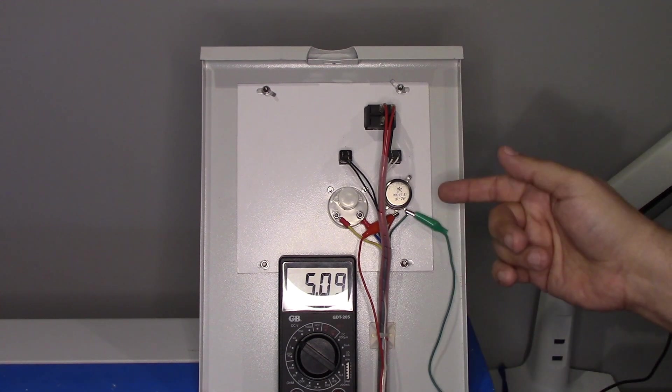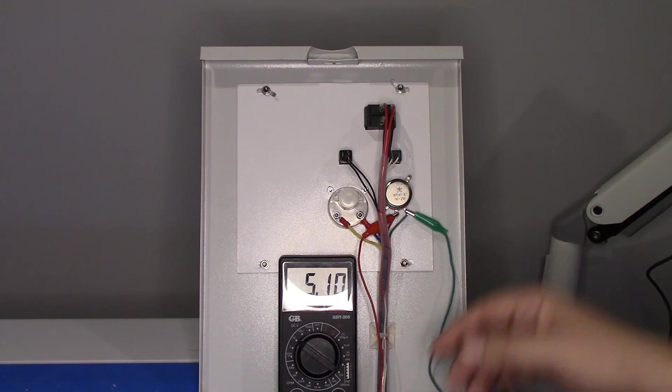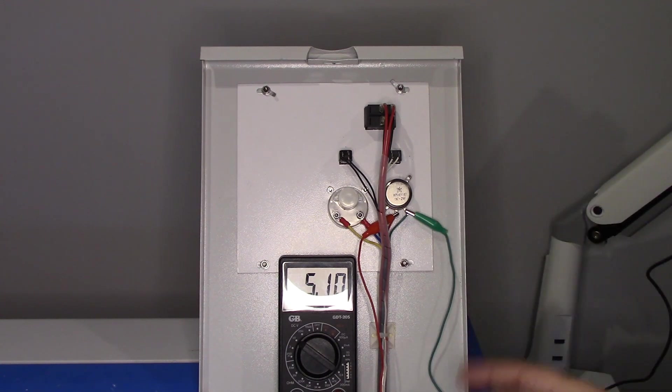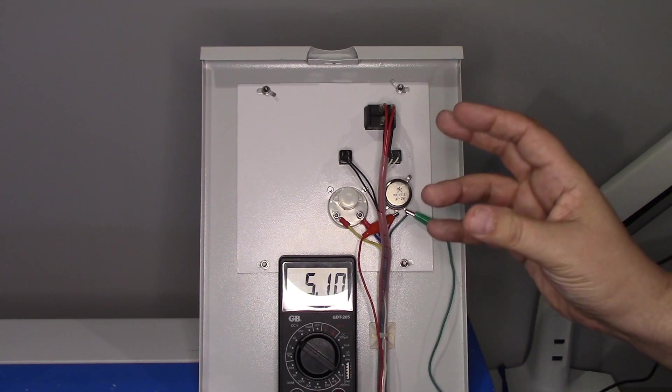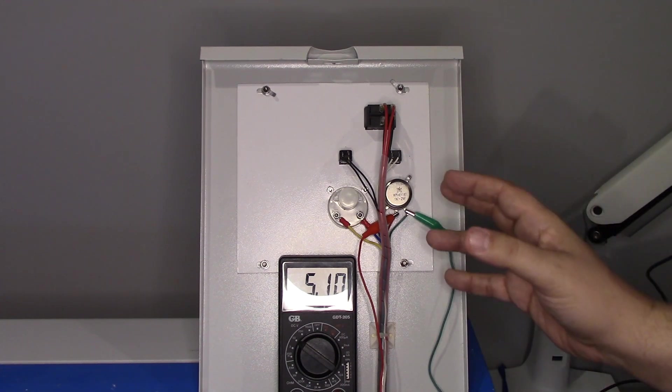So, again, in a future video, I'm going to show how to replace this. It's a simple fix, but for right now, I wanted to show what does this do? How does it impact? Why is it a failure point? So, if you're having a problem with your K40 laser, or you want to adapt your K40 laser to have variable output, this is how you can do it.